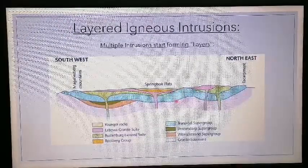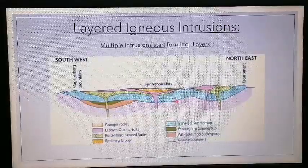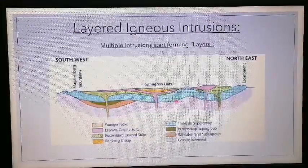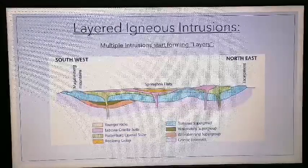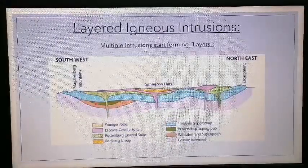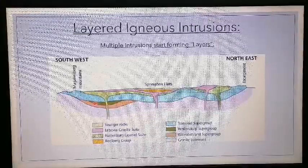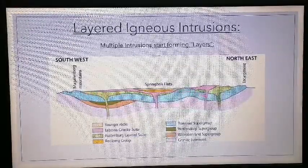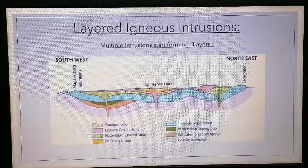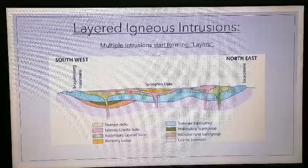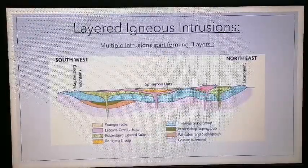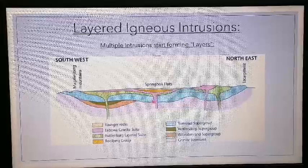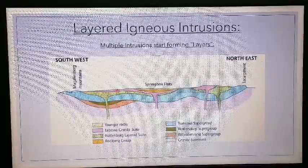Now, why is this important? On top of forming these different types of intrusions, we can form what is known as layered igneous intrusions. It's called that because you'd have one intrusion depositing magma — here it looks like we had a lopolith — then another intrusion forming a long sill, then a green intrusion forming another lopolith as part of the Rustenburg Layered Suite, then a pink intrusion forming a laccolith on one side. When this occurs, we call it layered igneous intrusions.